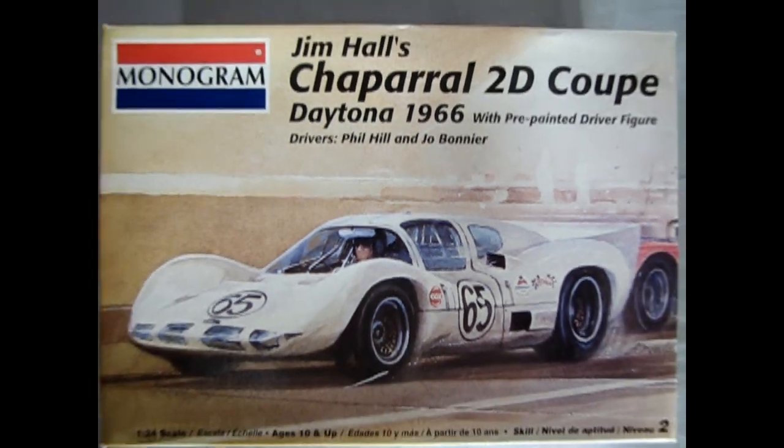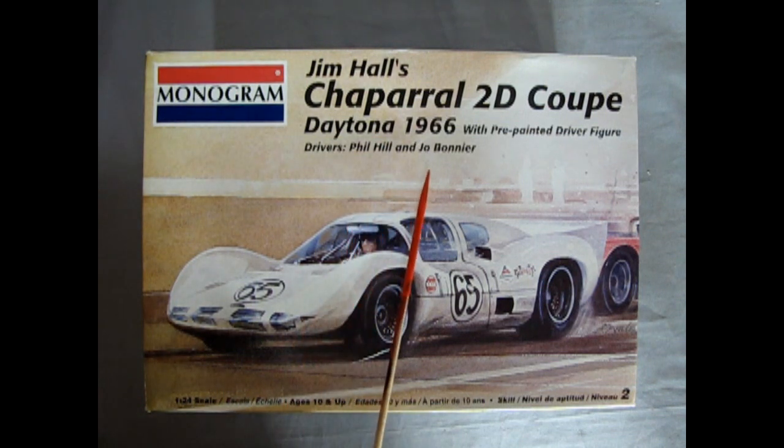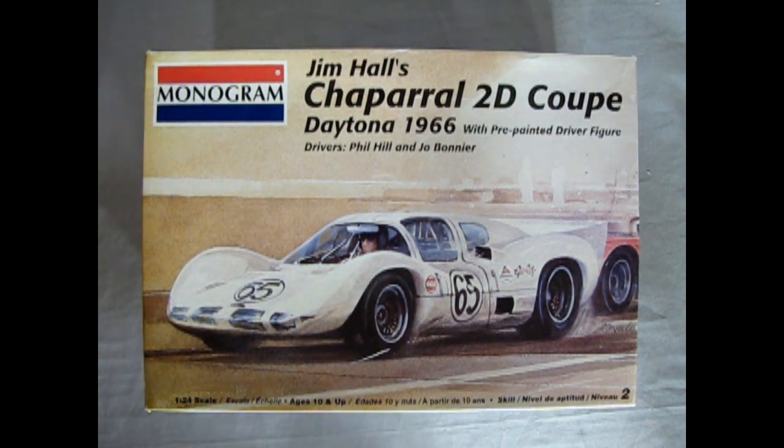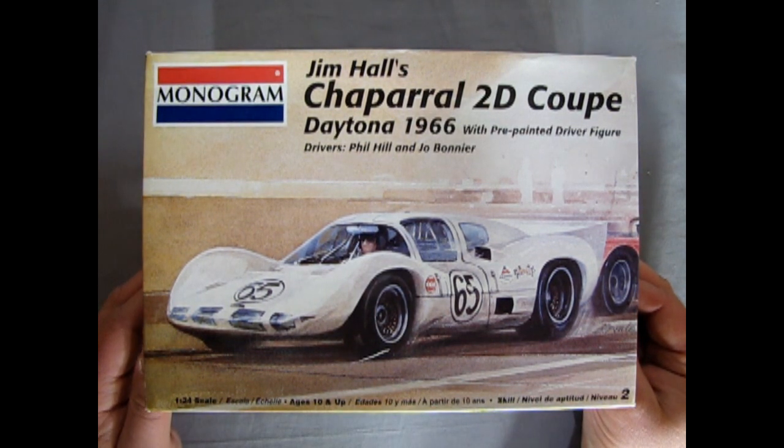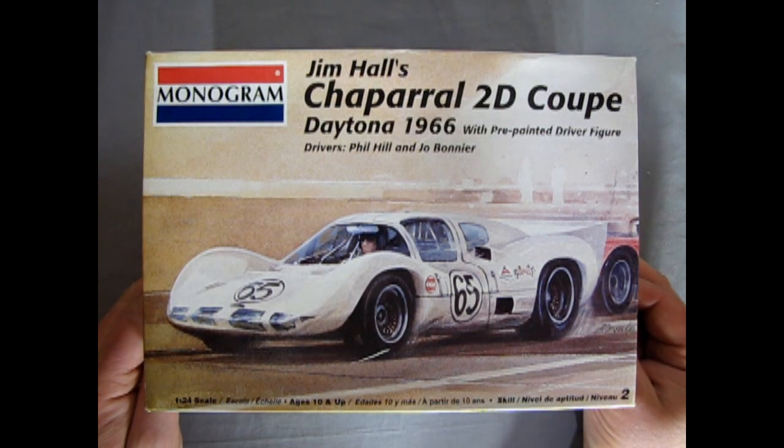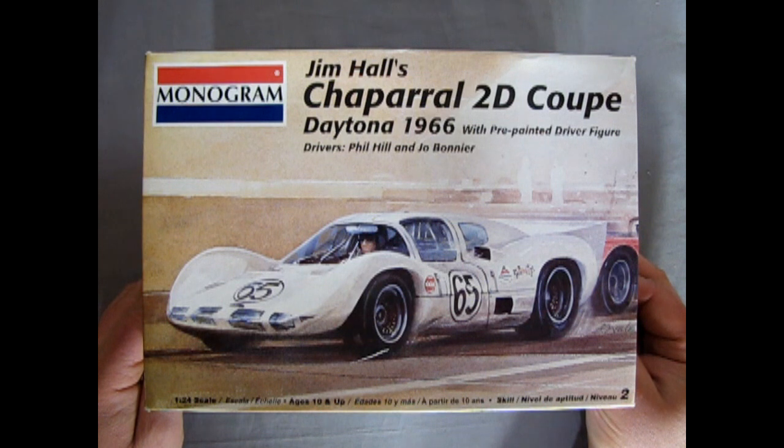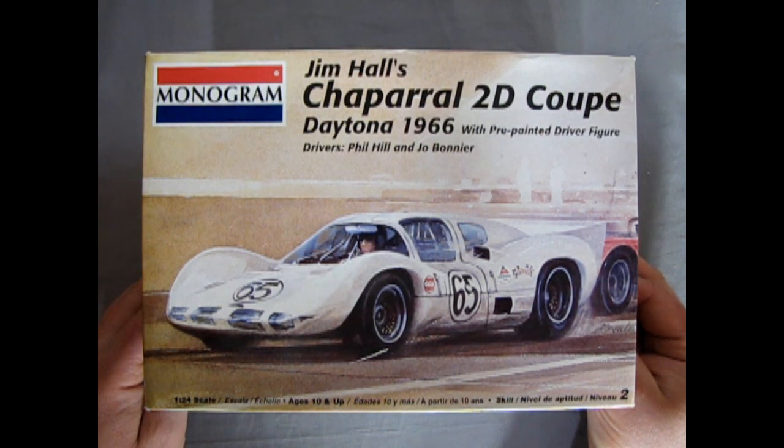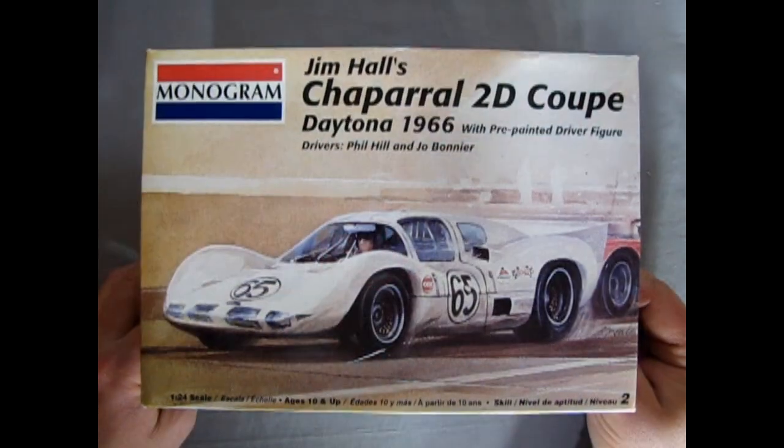Hello once again race fans and welcome back to the 1966 Daytona. Today we are going to be looking at Jim Halls Chaparral 2D Coupe with pre-painted driver figure. The drivers for this car were Phil Hill and Joe Barnier. This is a really cool kit. It was originally introduced in 1966 during the height of slot car racing, so it does have some details in it. It also has some very interesting blank areas where you can put in your own brass frame and, of course, a slot car engine if you were able to kitbash.